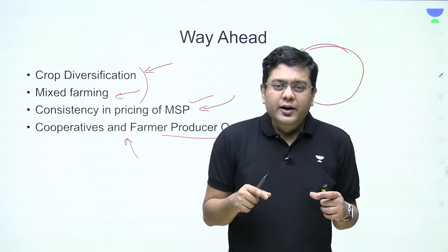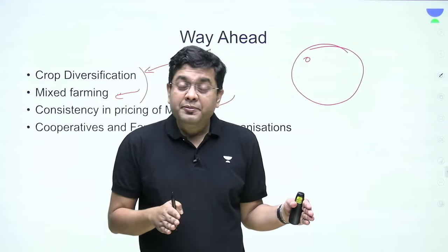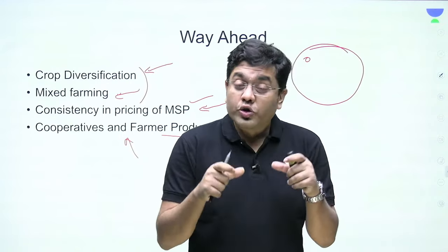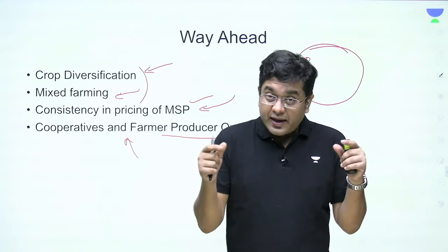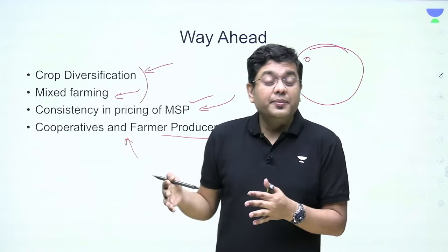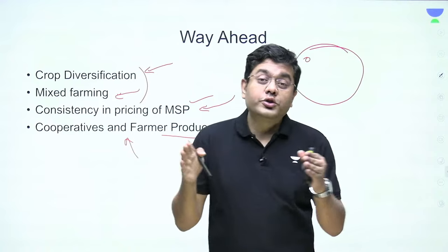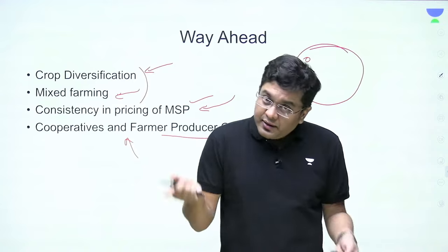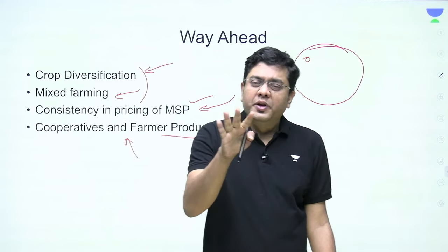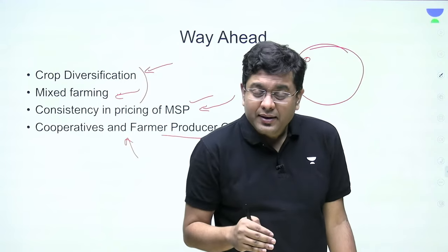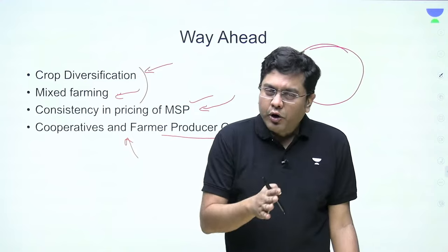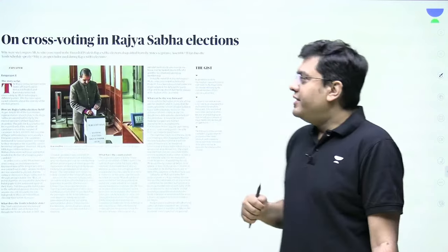Quick recap on MSP: the argument for and against, what MSP is, how it is calculated. A2 is input cost — seeds, fertilizers, insecticides, pesticides. FL is family labor. C2 is A2 plus FL plus rental cost and interest on capital. The Swaminathan Commission advised C2+50% as the MSP formula. The government is not applying this — it needs to be done, alongside other mechanisms to improve the farm sector.